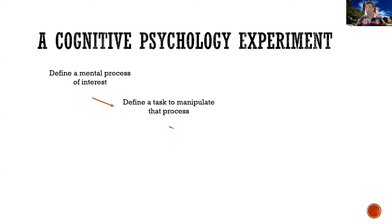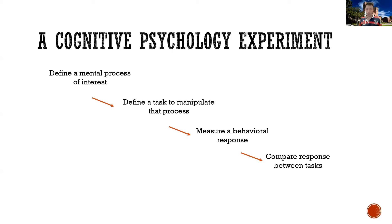What we might do is measure some kind of behavioral response — maybe response time, how long it takes a participant to respond to a question about the sentence they just read, or how accurately they can respond. Then we would compare how accurately or quickly somebody responds to sentences in condition A — sentences with no ambiguity — versus condition B — sentences that did have some kind of ambiguity.